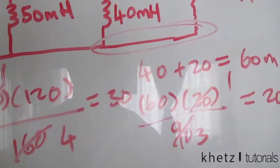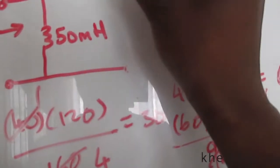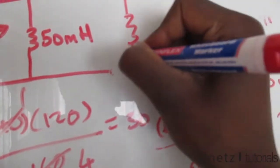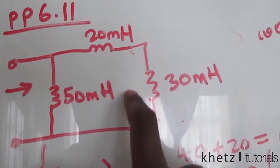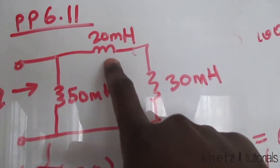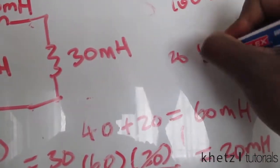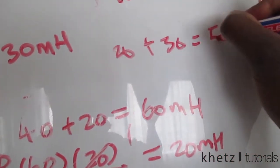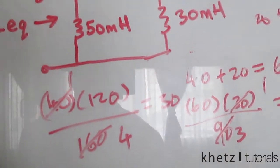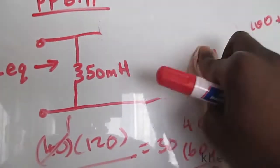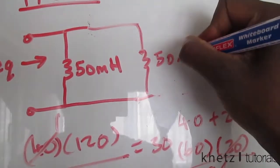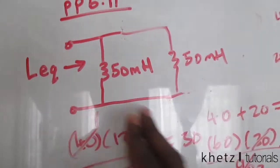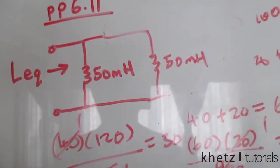So we have 30 millihenries as the result of those two in parallel. We also have 30 and 20 millihenries in series, which means we add 20 plus 30 to get 50 millihenries. Replacing that with the equivalent, we have 50 millihenries. Finally, the result of these two remaining inductors will be our final answer.